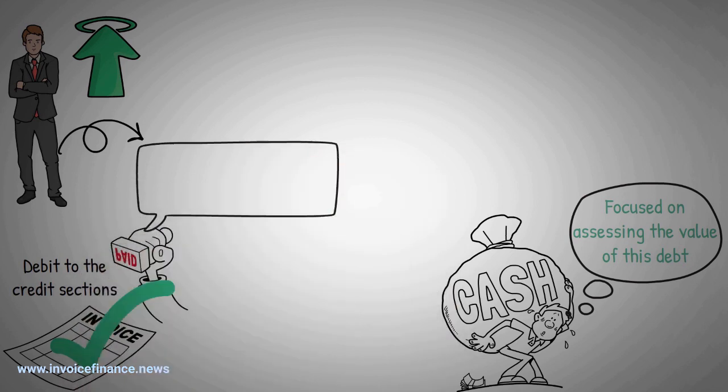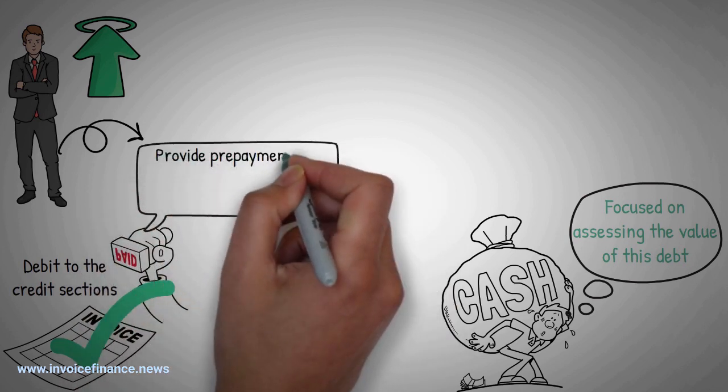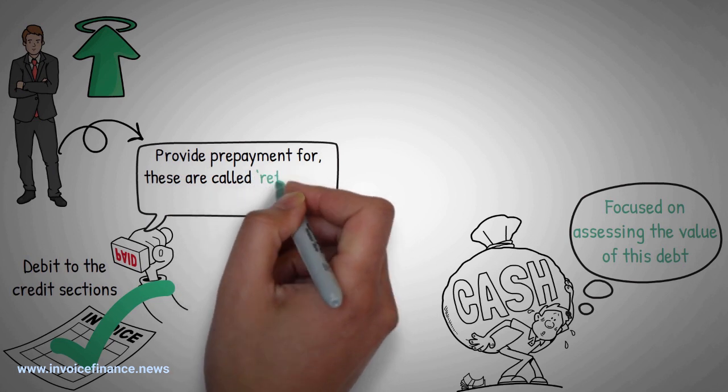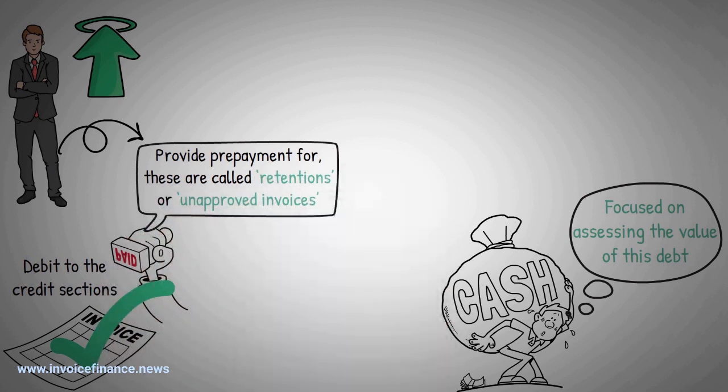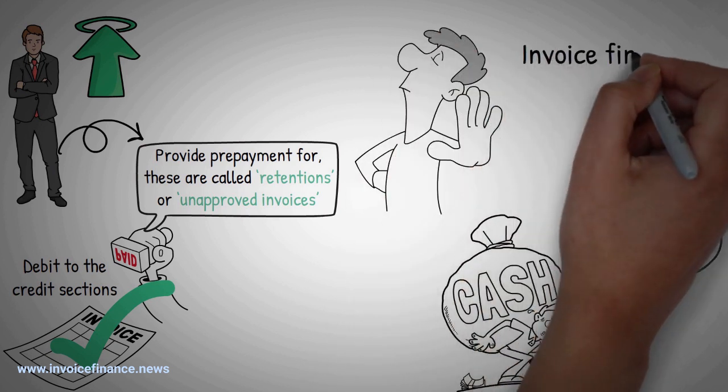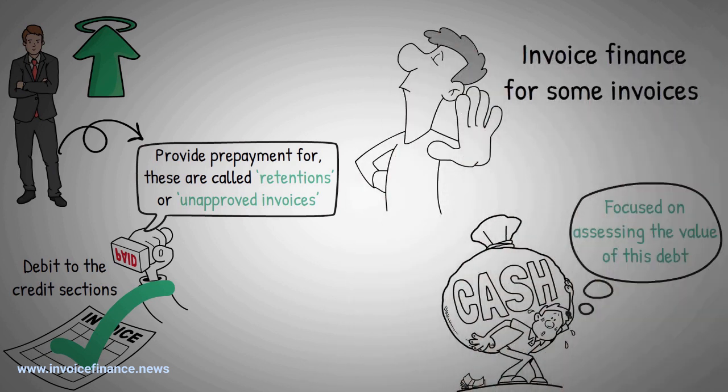There will be some invoices on the sales ledger that the factoring works firm will not buy or provide prepayment for. These are called retentions or unapproved invoices. The reasons for refusing invoice finance for some invoices are as follows.